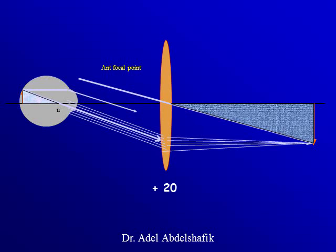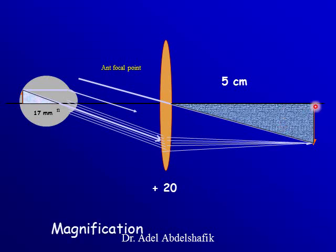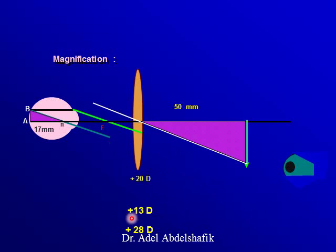These two triangles are related to one another. If this lens is plus 20 diopters, then this distance should be 5 centimeters. We know that the nodal point of the eye is about 17 millimeters in front of the retina, so we can calculate the magnification: the size of the image divided by the size of the object equals 50 millimeters divided by 17 millimeters. If we use 30 diopters, the focal length will be shorter; if we use the 13-diopter lens, the focal length will be longer and the magnification will be greater.